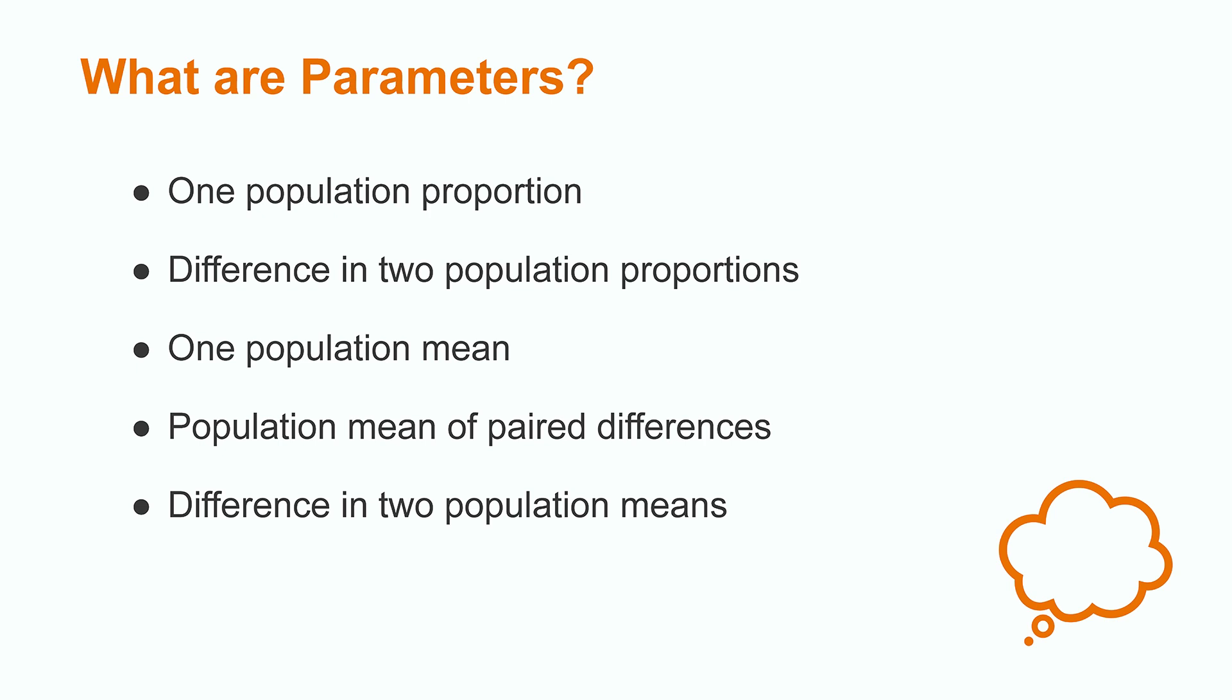When we want to answer a research question using statistics, we ask questions about parameters. A parameter is a value that represents an entire population, whereas a statistic is used to estimate a parameter. We use different parameters based on our research question.